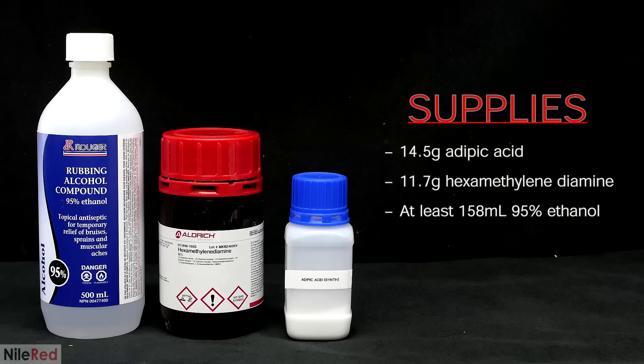To get started, in terms of chemicals, I really only need three things. I'll be needing some 95% ethanol to use as a solvent, some hexamethylenediamine, and adipic acid. The adipic acid was made in a previous video, and if you're interested in seeing how I did this, there's a link in the description.